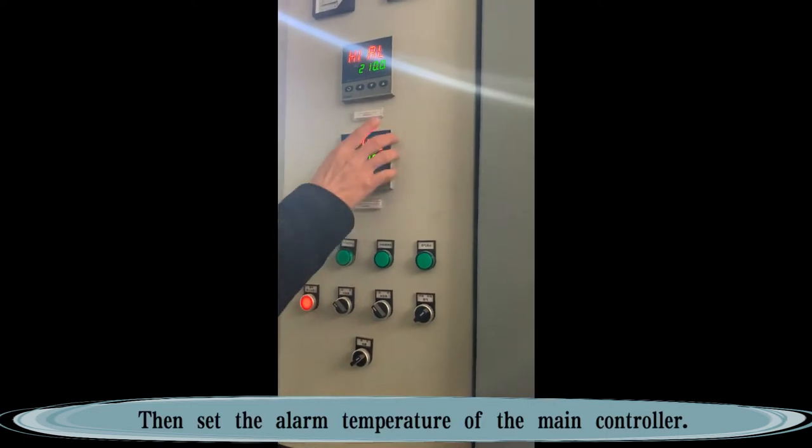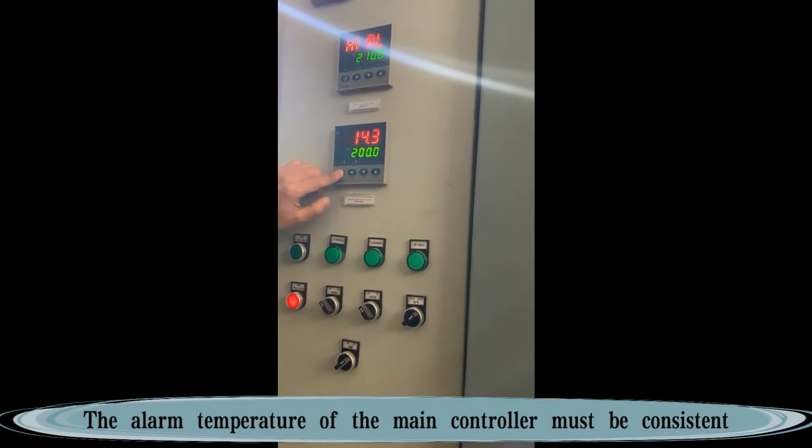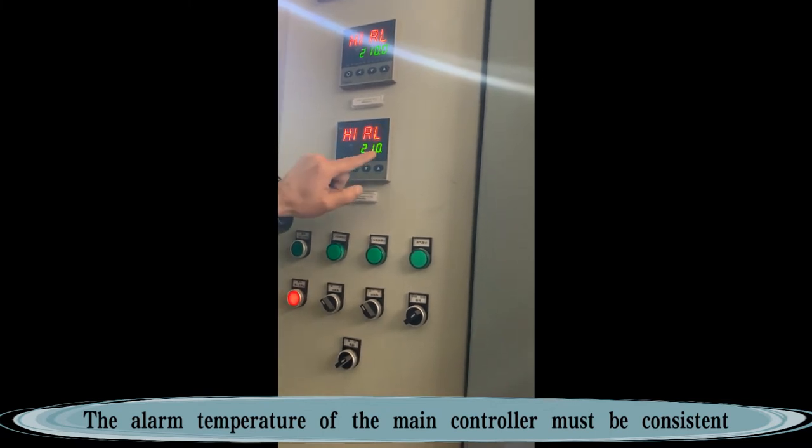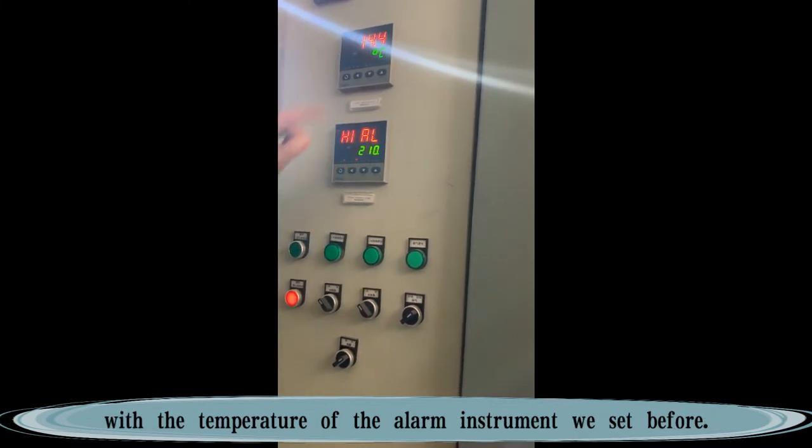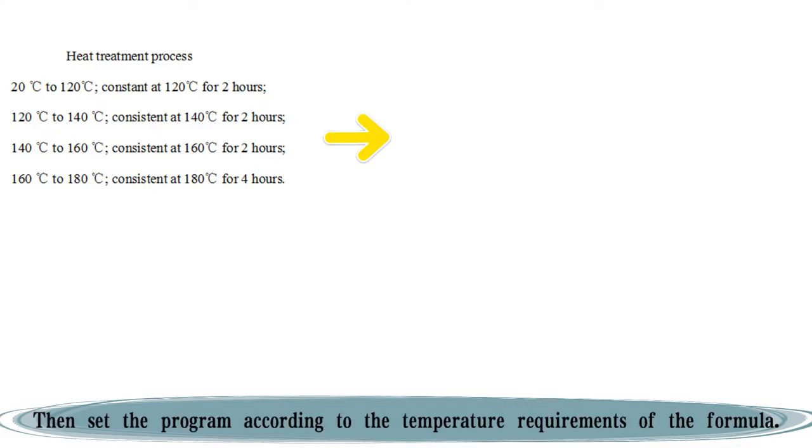Then set the alarm temperature of the main controller. The alarm temperature of the main controller must be consistent with the temperature of the alarm instrument we set before. Then set the program according to the temperature requirements of the formula.